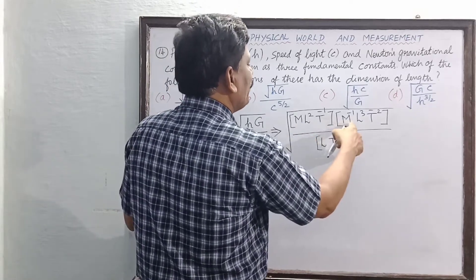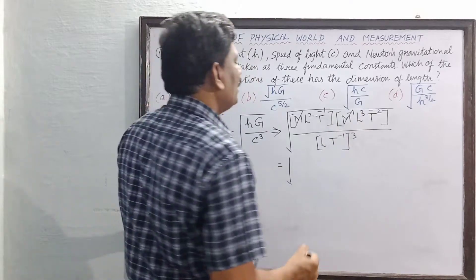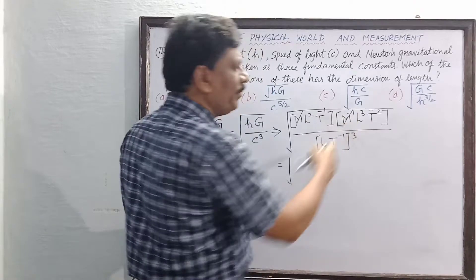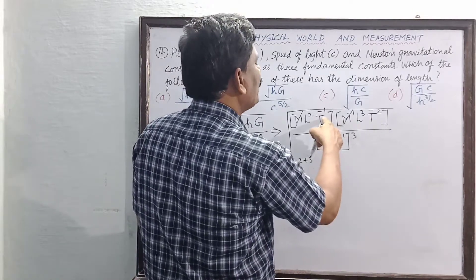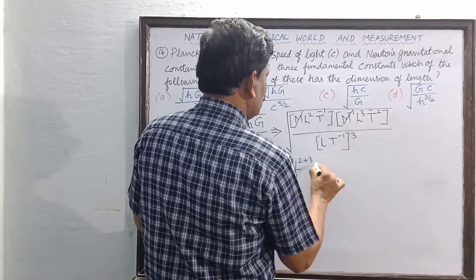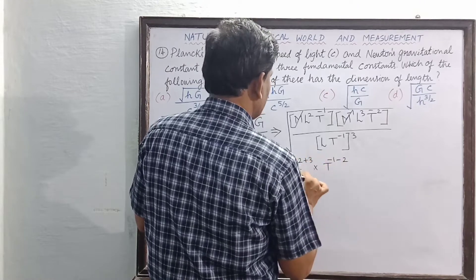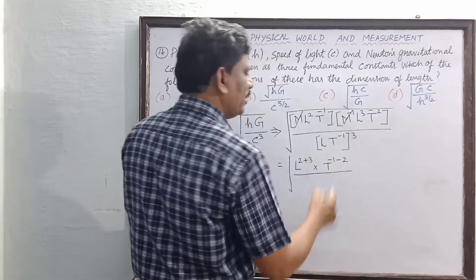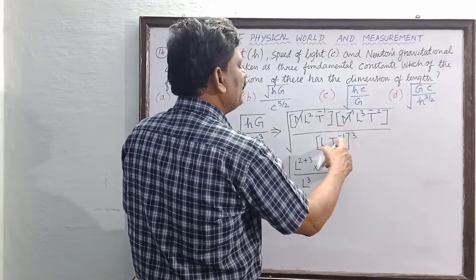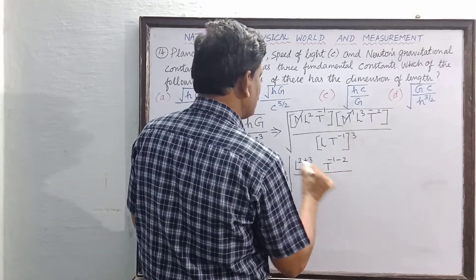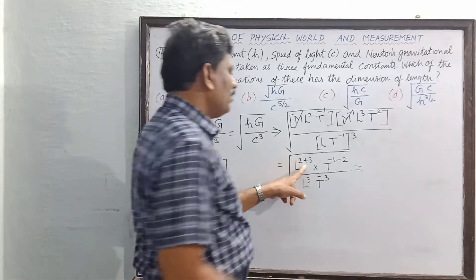In the numerator, M and M⁻¹ cancel each other. The L terms combine: L² times L³ gives L⁵. The T terms in the numerator: T⁻¹ times T⁻² gives T⁻³. So the numerator is L⁵T⁻³ and the denominator is L³T⁻³.